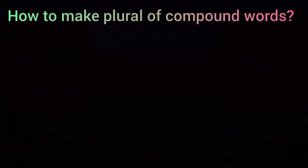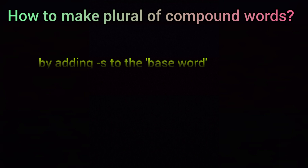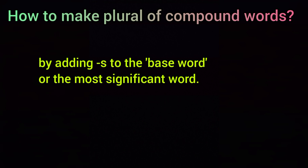Now let us see how to make the plural of compound words. In general, we make the plural of a compound noun by adding 's' to the most significant word — the most important word in the compound.